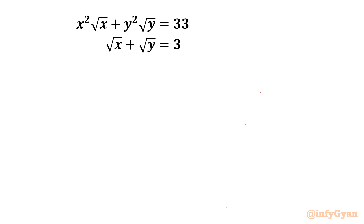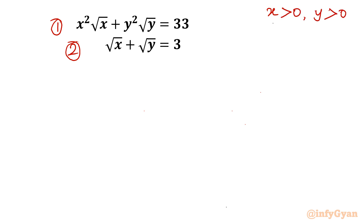Welcome back to Infigyan, my dear friends. Today in this video we are going to take up one very interesting and challenging system of equations. The equations are x√x + y√y = 33 and √x + √y = 3. We have to find real solutions only. So we begin by noting x > 0, y > 0, meaning x + y must always be positive. I will solve this question in two different ways.